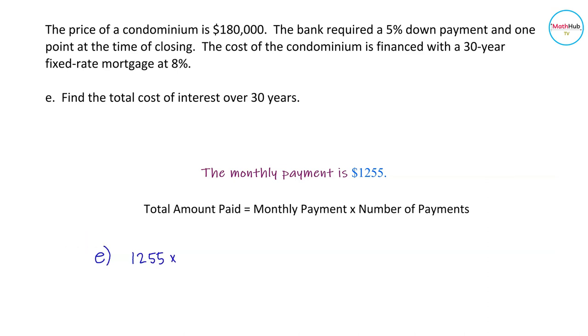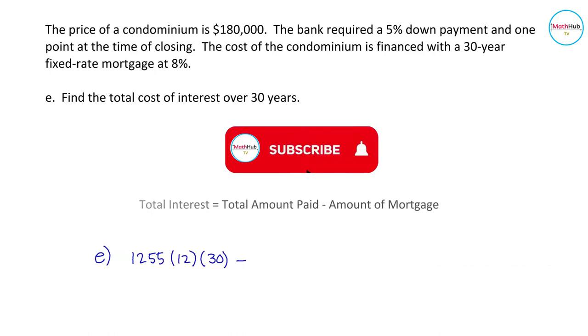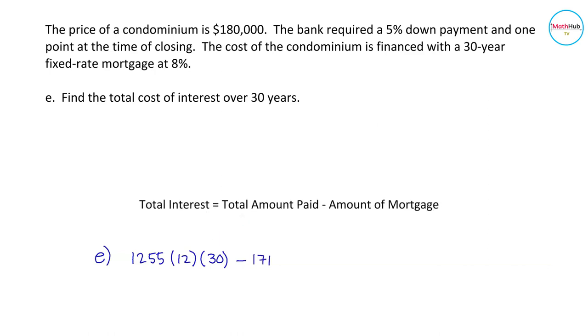So you pay 12 times in a year. So it's 1,255 times 12 times 30 because you're paying for 30 years. Subtract the amount of mortgage. This is the amount that you borrowed initially. You will get $280,000.